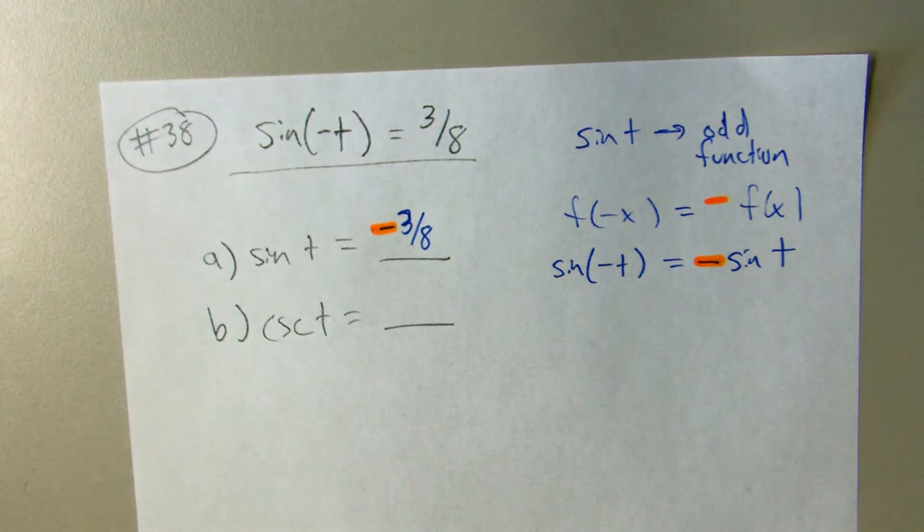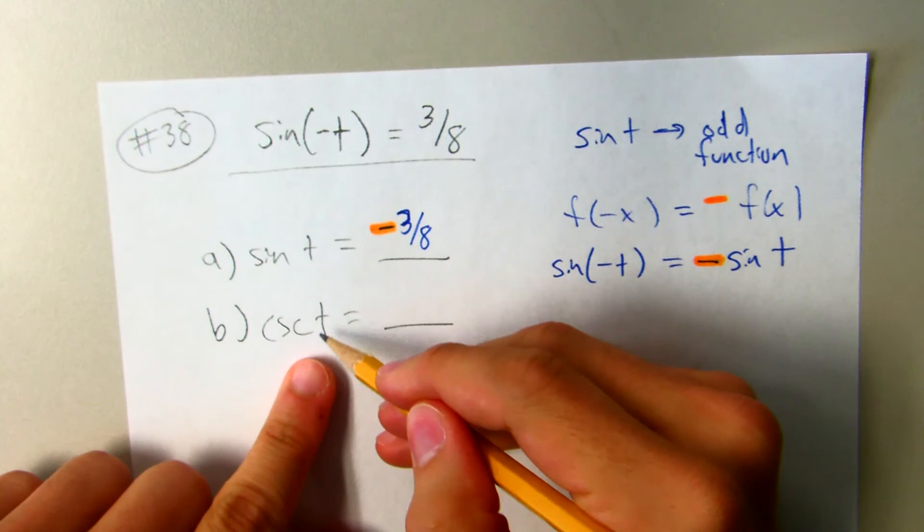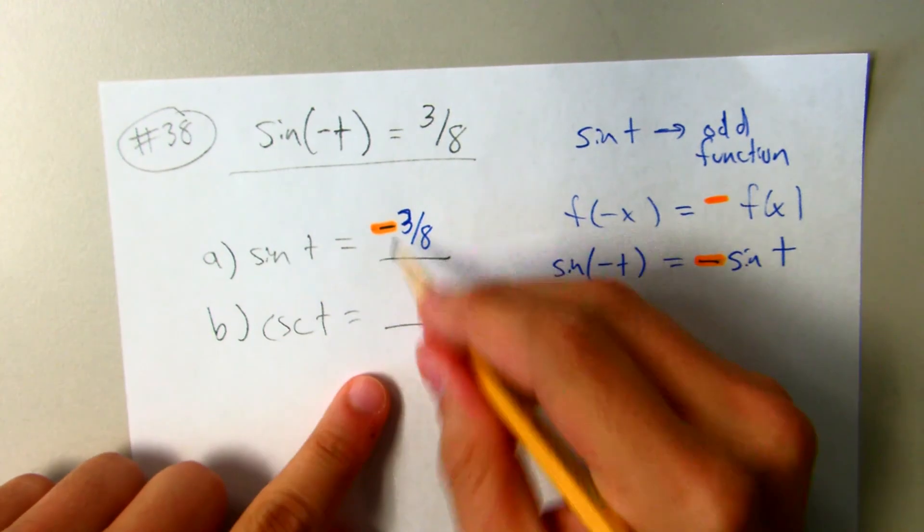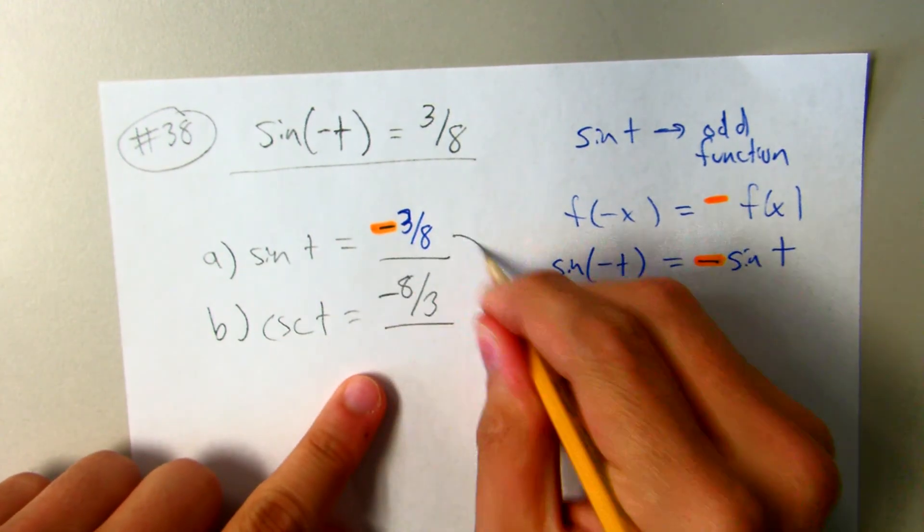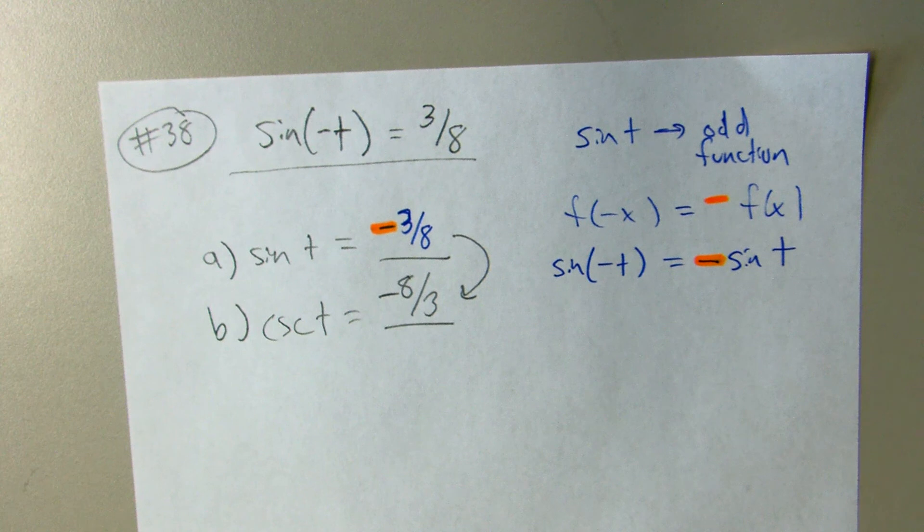And then that's the hard part of the question. These are talking about the same angle, and cosecant's just the reciprocal. So this is a reciprocal.